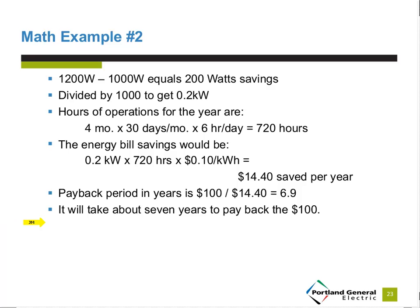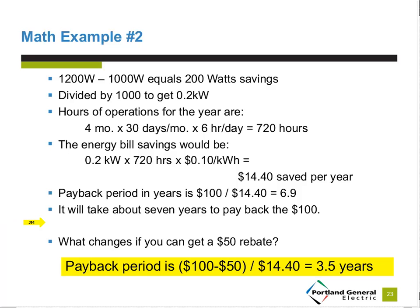An important thing to consider: what if you could get a rebate? With a $50 rebate, the payback period changes: ($100 minus $50) divided by $14.40 = 3.5 years — the payback period drops in half. Keep track of available incentives. Even a project with a seven-year payback could become attractive six months later when a rebate appears. Keep a list of projects and check on rebates regularly.